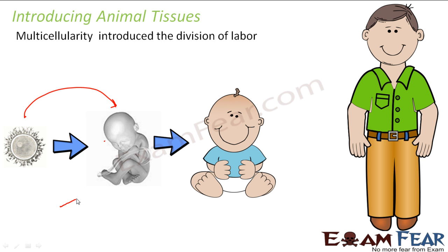Some cells form muscle cells, some form nerve cells, some form blood cells, and some form brain cells — similarly every cell finds its own function. This is how the entire body of the baby is formed. With nutrients and time, the baby develops different organ systems because the cells have clustered together to form specific tissues. The tissues cluster together to form organs, and organs cluster together to form organ systems, and finally the baby is born.